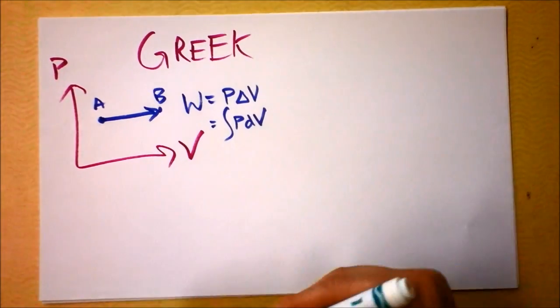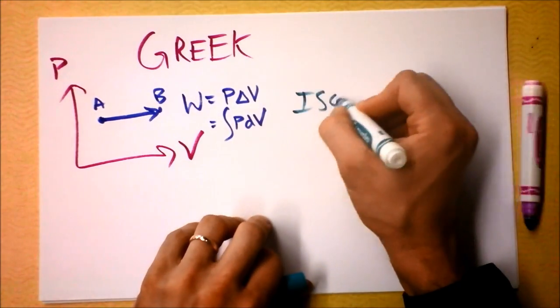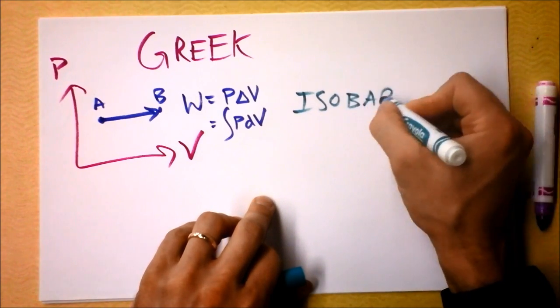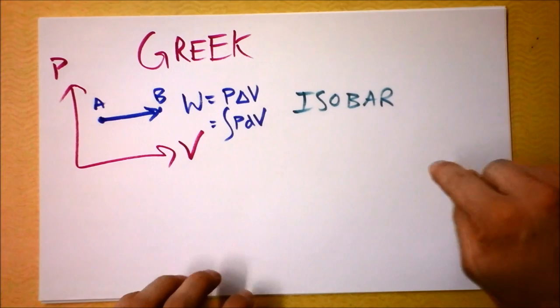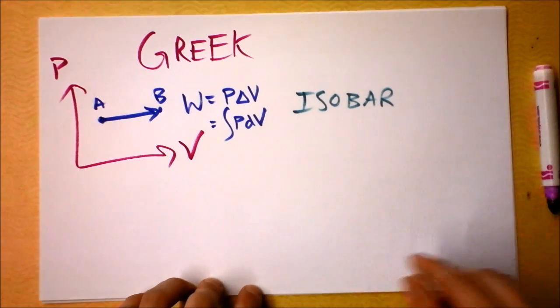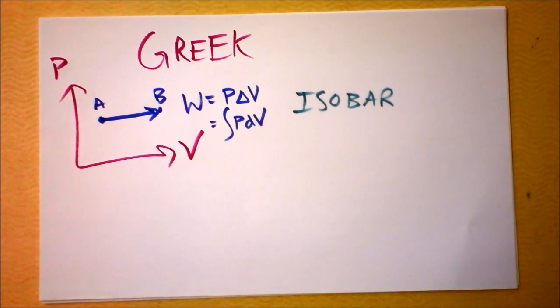So this kind of thing is called an isobar, which is Greek meaning same, and bar, which is Greek meaning what? Pressure. Yeah, barometers are a device for measuring, that's the meter part, and pressure is the bar part.